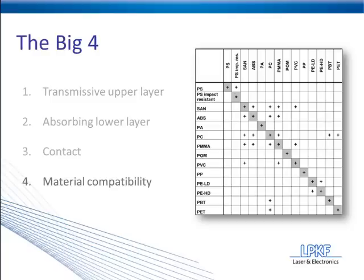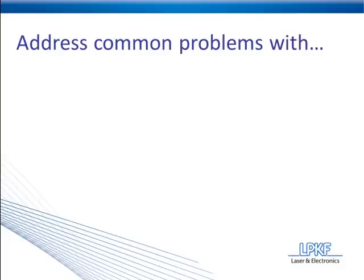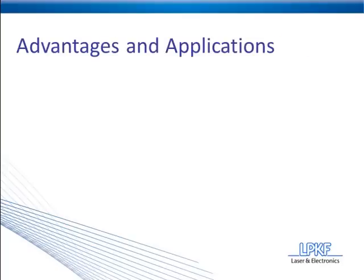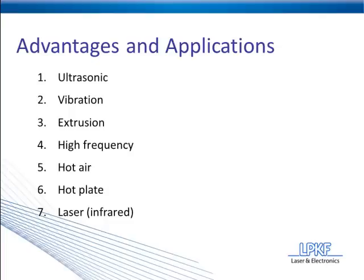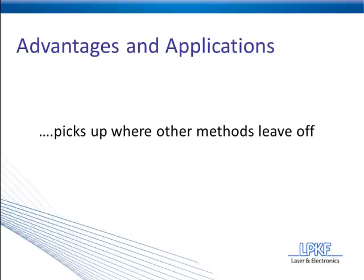That wraps up topic number one. Let's move into topics two and three — how laser plastic welding addresses common problems with other plastic joining methods, which we'll refer to as advantages of laser plastic welding. Here's a quick list of the most common plastic joining methods. We're not going to go into those in detail today. Just because laser plastic welding is very flexible and has a lot of advantages doesn't necessarily make it the best process for every application. The way we like to say it is laser plastic welding picks up where the other methods leave off — if you have a complex application that requires solutions you haven't found with other methods, laser plastic welding may be a great option.